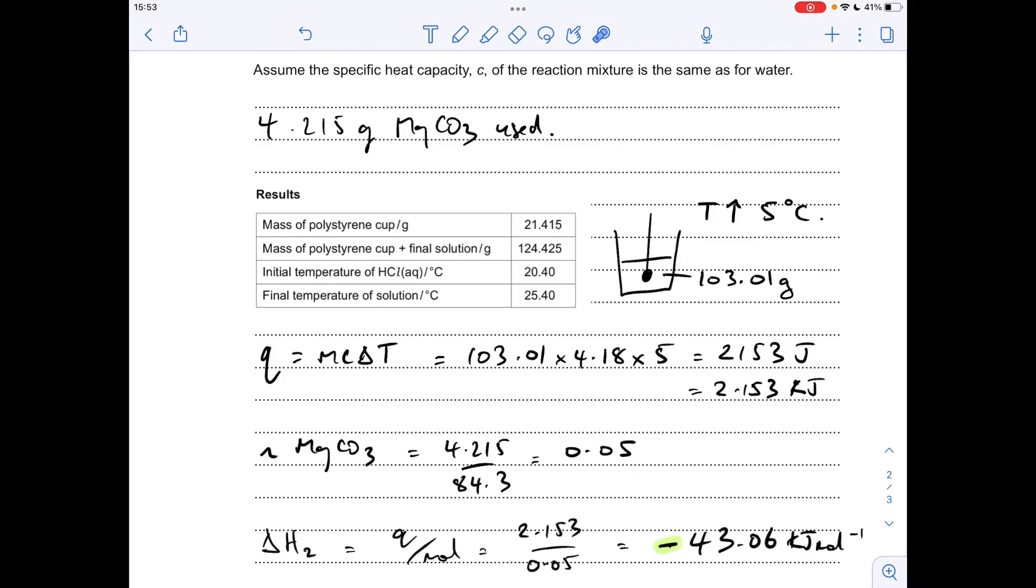So delta H2 is the Q over the moles, so the kilojoules over the moles, minus because it was exothermic, temperature's gone up 5 degrees C, 43.06 kilojoules per mole.